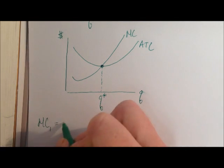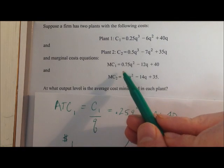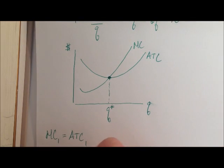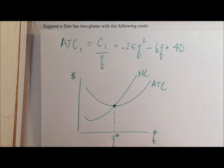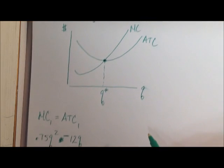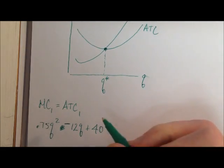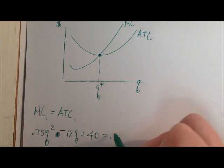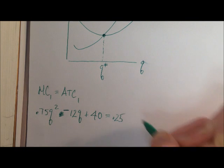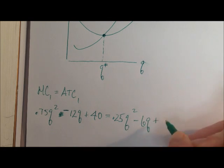So we can see here our marginal costs are given by this equation, and so we'll just set those equal. So MC1 equals ATC1, which means that we get 0.75Q squared minus 12Q plus 40, that's our marginal cost 1, equals our average total cost 1. It's just what we already found up here. And so we set that equal to 0.25Q squared minus 6Q plus 40.